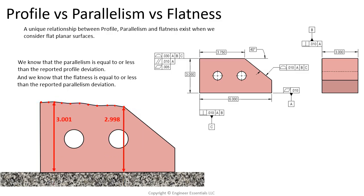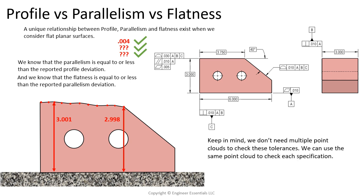If the values during our inspection give us a profile deviation of four thousandths, we know that parallelism will also be equal to or less than four thousandths, and we can assume flatness will be equal to or less than four thousandths as well. In that scenario, if we get a four-thousandths reading for profile of a surface, we could accept parallelism and also accept this feature for the flatness specification of five thousandths. We don't actually know the exact flatness or parallelism error — we just know it's going to be equal to or less than four thousandths. Also worth noting: we don't need multiple point clouds to check these tolerances; we can use the same point cloud to check each specification separately.